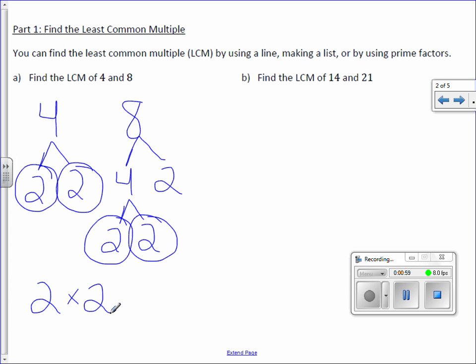We then need to look at everything that's left over. There is a 2 left over, so we are going to bring that 2 down as well. So 2 times 2 is 4, times 2 is 8. So the LCM, or least common multiple, is 8.